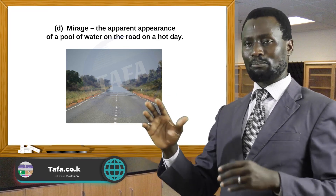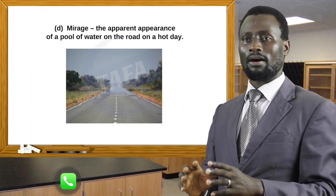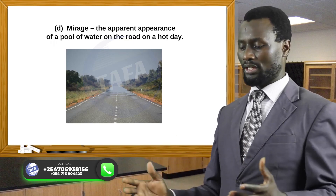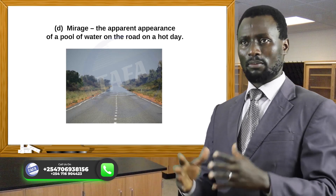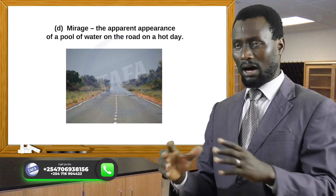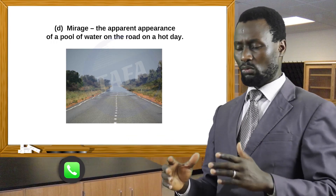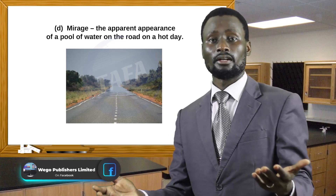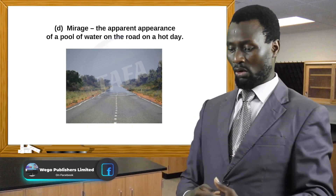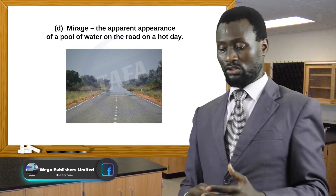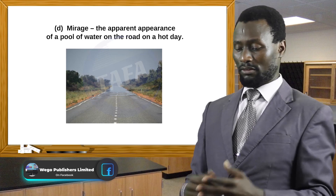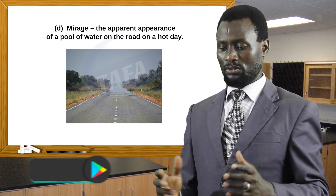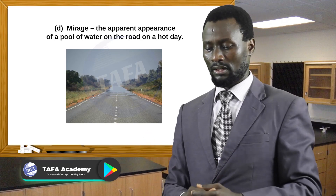A mirage is the apparent appearance of a pool of water on the road on a hot day. Have you ever been amazed at how that comes about, and when you reach the spot where you saw the pool of water, there is no water? That is a mirage, and physics seeks to explain how a mirage forms.